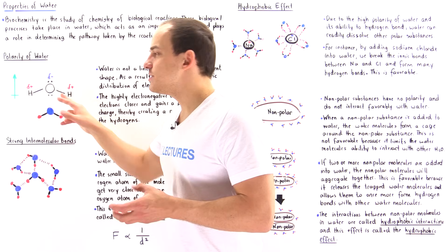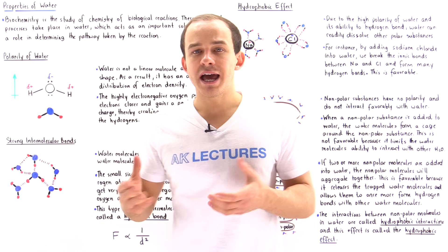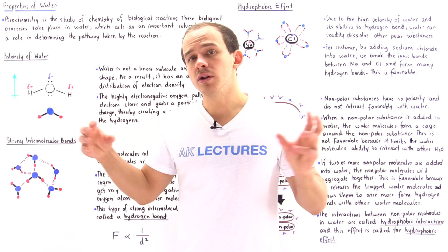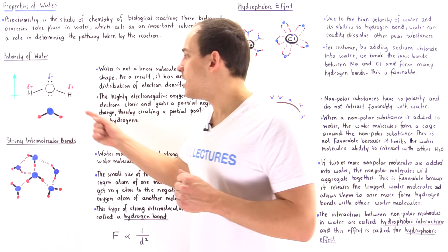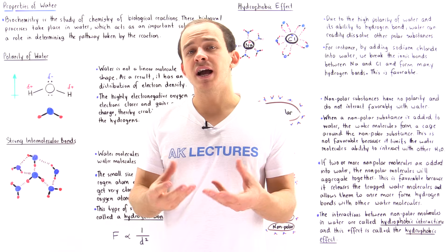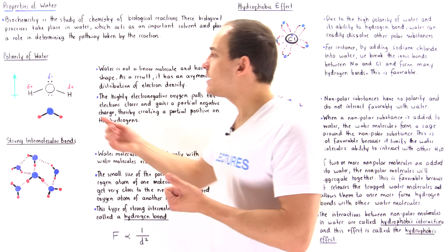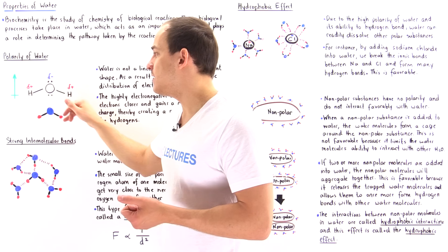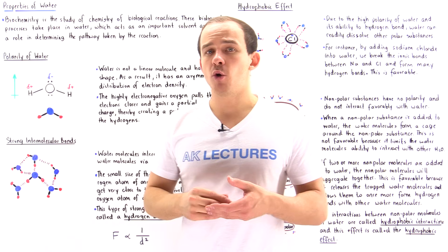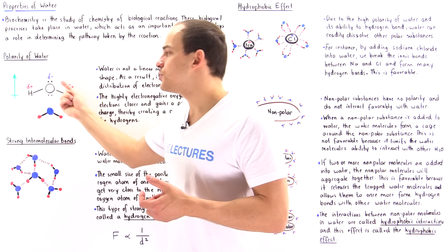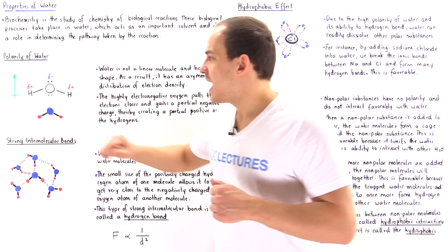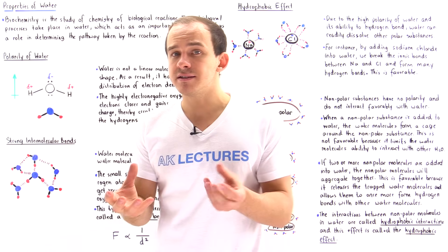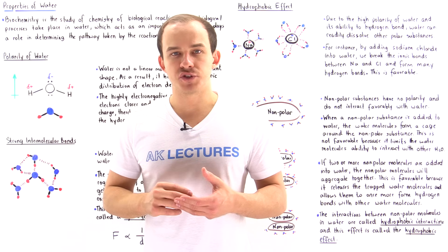Now, oxygen is much more electronegative than either of these H atoms. And because of that, oxygen is able to pull that electron density away from these two H atoms. Because it is much more likely that the electron density will be found around the oxygen than around the H atoms, that oxygen atom will have a partial negative charge, and the two H atoms will be deficient of the electron density and so they will have a partial positive charge.